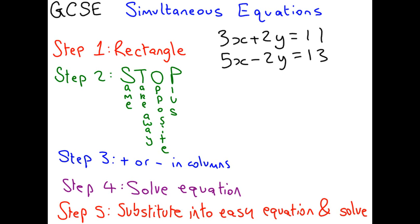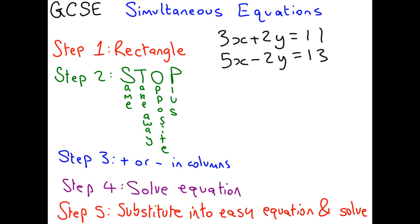If they weren't in this form, you could rearrange them yourself to get it in nice columns of your X's, your Y's, then your numbers. Now this method is called the elimination method. It means that first of all, we're going to eliminate one of the letters to find the other one. These 5 steps do the job of finding what both letters equal — a value of X and a value of Y that not only solves the first equation, but also solves the second one. That's why they're called simultaneous: you're finding letters that solve them both at the same time.